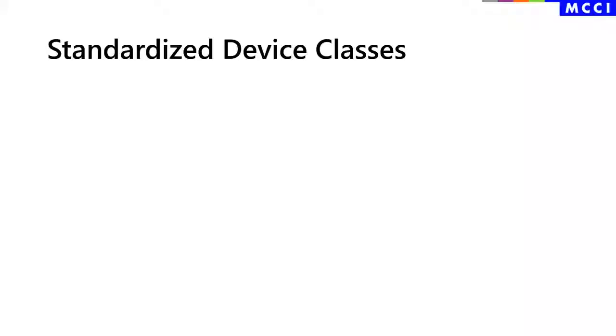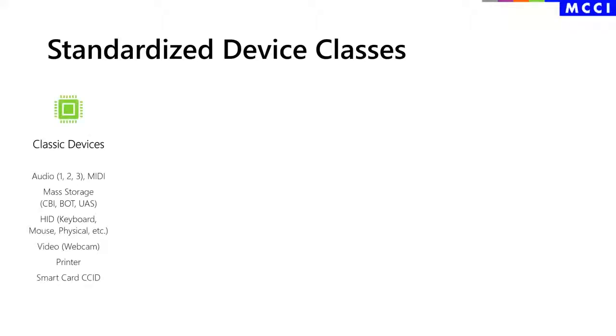Just as there are a lot of different kinds of devices, there are a lot of different device classes. We can sort them into different categories. Classic device classes represent traditional devices that have migrated to USB: audio, mass storage, keyboard, mouse, webcam, printer, smart cards.